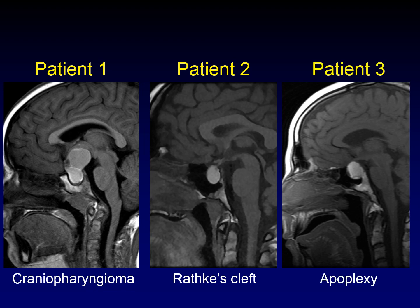Our third patient has apoplexy — the term we use for sudden hemorrhage into a pituitary adenoma. The gradient of T2 signal we saw was our first clue that we have hemorrhagic debris. Notice that there's less sellar enlargement here because the hemorrhagic component is a sudden event. So here are our three diagnoses: craniopharyngioma, Rathke's cleft cyst, and apoplexy. These can be difficult to tell apart, but there are some subtle clues to help you out.